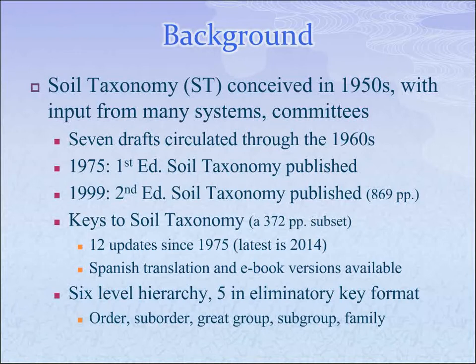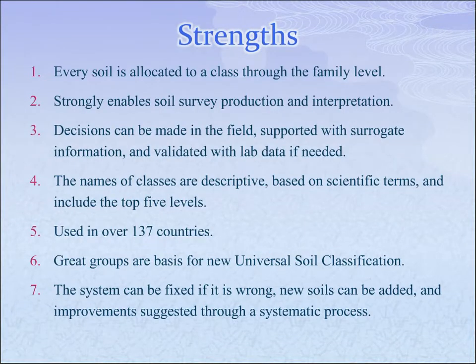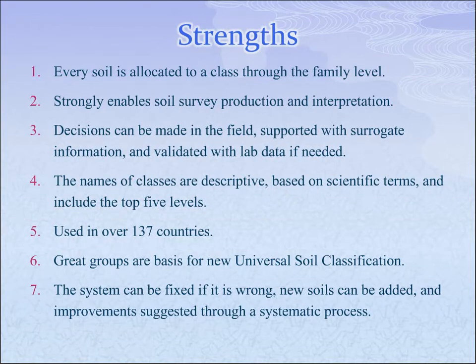Some of the strengths of the system: every soil is allocated to a class through the family level. The system also strongly enables soil survey production and interpretation. One of the good things about it is you can make decisions right in the field when using soil taxonomy. It also makes tremendous use of ancillary laboratory data. The names are somewhat descriptive based on scientific terminology, at least at the top five levels. Soil taxonomy is widely used — 137 countries have utilized it at some point.